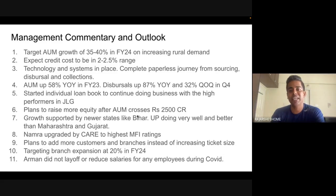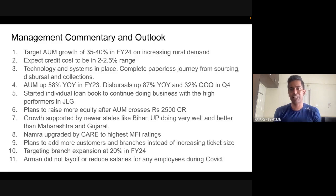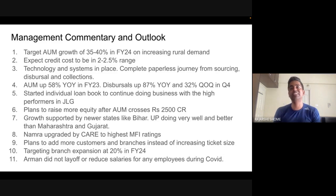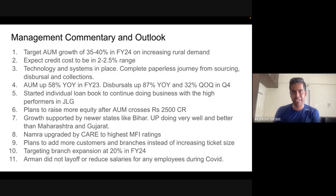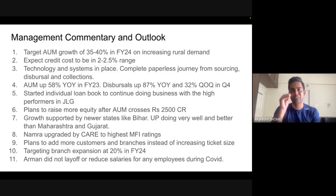Arman plans to raise more equity after the AUM crosses 2,500 crore. When they raised equity in September 2022, it was at a price-to-book of 5.5 — a great sign. If a financial can raise equity at more than one times book, it means the market views it as a great institution. Bad financials trade below book and struggle to raise money. Bajaj Finance has always raised equity at three to five times book — and the same logic applies to Arman.